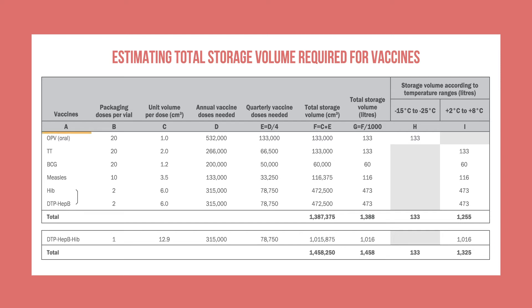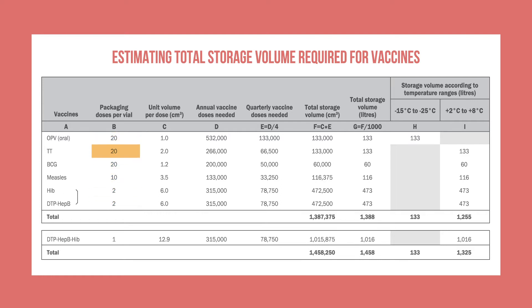First, list every vaccine in the schedule. If diluents need to be refrigerated, they should be included in the list. For each vaccine, list the number of doses per vial according to the presentation being used. Here, the district has ordered tetanus toxoid, or TT, with 20 doses per vial.